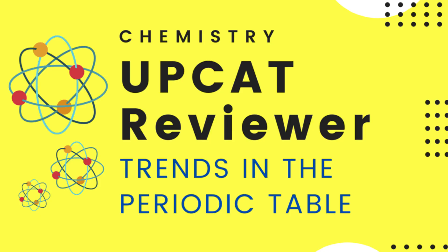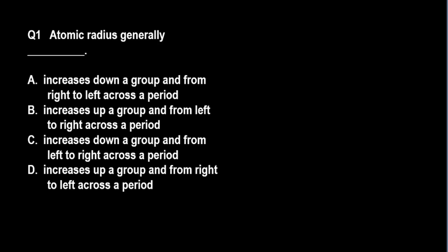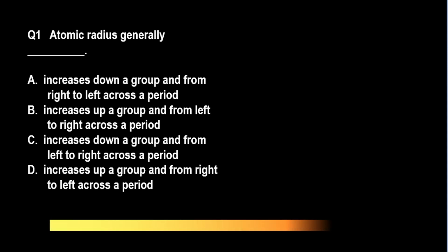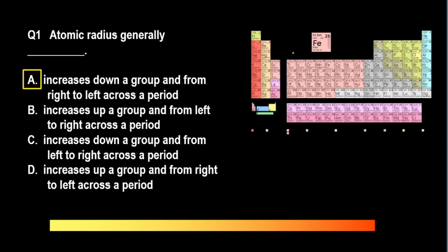Question number 1 — Atomic radius generally: A. increases down a group and from right to left across a period; B. increases up a group and from left to right across a period; C. increases down a group and from left to right across a period; D. increases up a group and from right to left across a period. The correct answer is letter A.